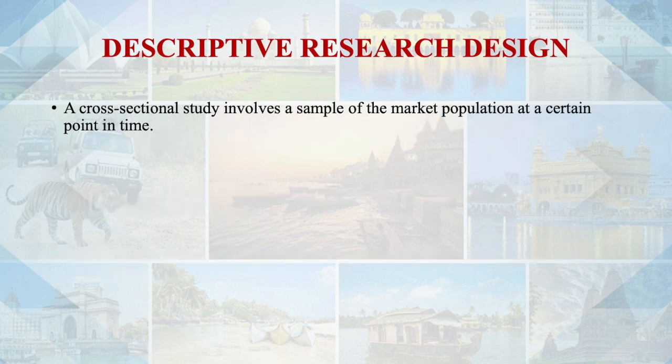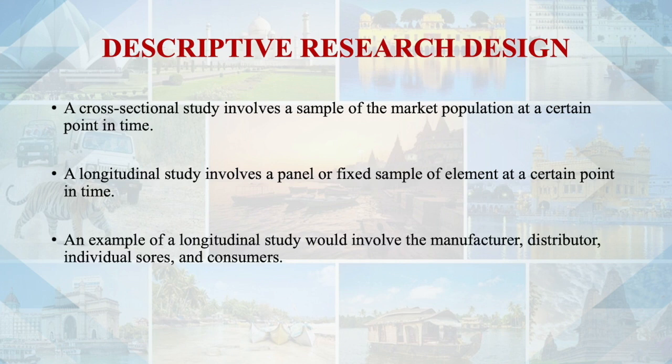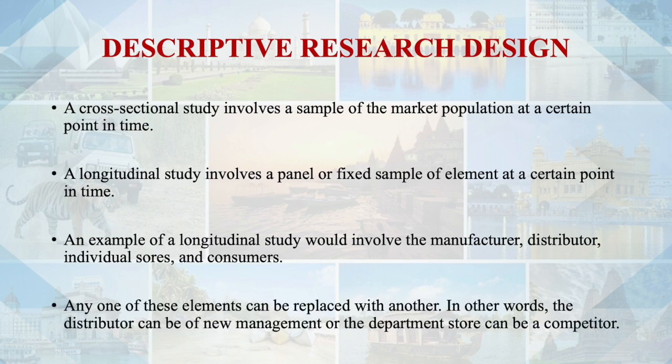A cross-sectional study involves a sample of the market population at a certain point in time. A longitudinal study involves a panel of fixed samples of elements over time, for example involving manufacturer, distributors, individual stores, and consumers — any of which can be replaced. In a longitudinal study, there are two types of panels: continuous panels and discontinuous panels. Panel members are compensated for their efforts. In a continuous panel, a fixed sample of respondents is measured repeatedly over time under the same conditions.